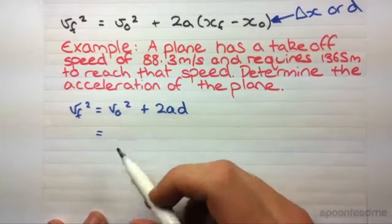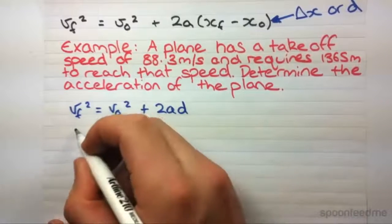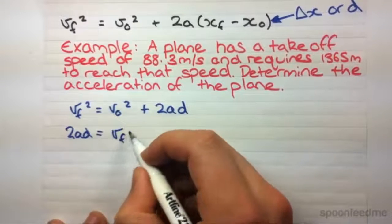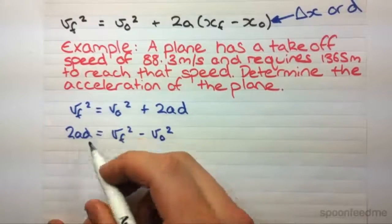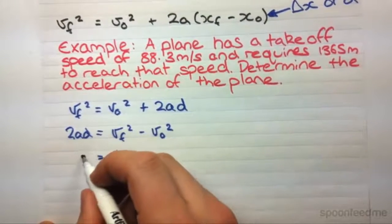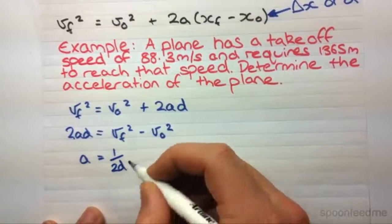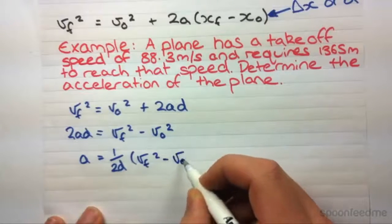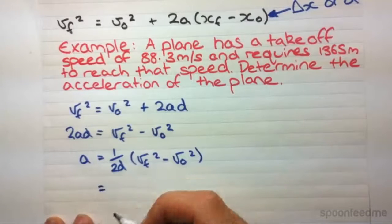So, I'm going to subtract V0 squared off both sides. Then, I'm going to divide by 2d to end up with just a over there. Now, we can start subbing in our values.